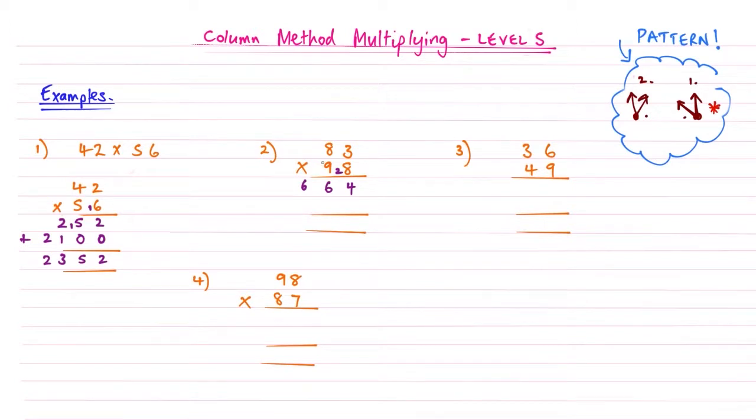Moving to the second part where we multiply the 9, we add a 0. 9 times 3 is 27, carrying that little 2 up there. Then 9 times 8 is 72, add that 2, and it becomes 74. Now we add these two together.